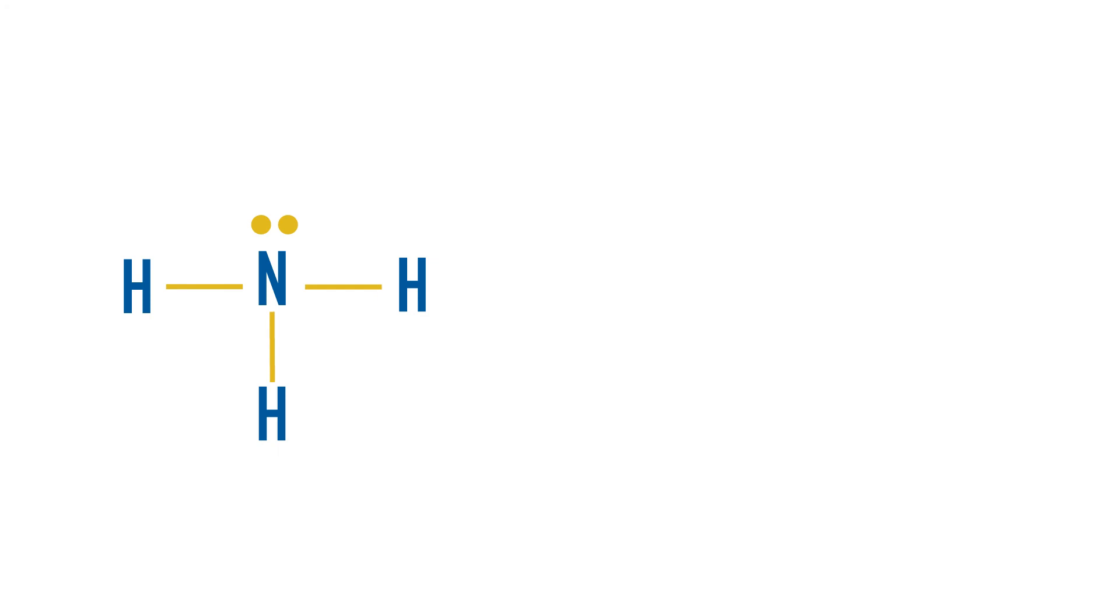Once we have the correct Lewis structure, now we have to think about how many electron groups are around it. If we look at the number of electron groups, we have four electron groups. We have one electron group for each hydrogen, bonded pair electron groups, and we have the lone pair, a lone pair electron group.